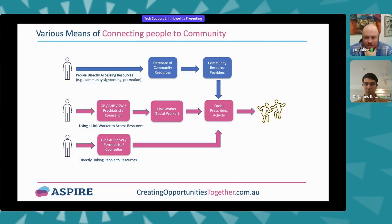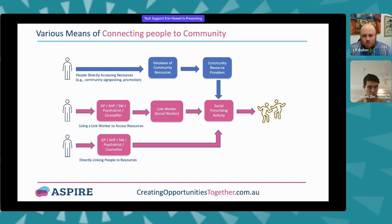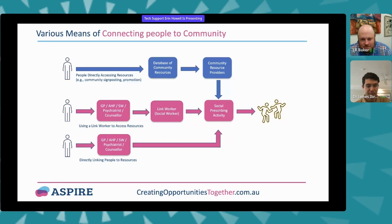There are lots of different ways to connect people back into community resources. The top path is the traditional way of signposting community resources — databases, local networks, or council websites. The middle path is the most common social prescribing model: the link worker-assisted approach, where a health provider — GP, social worker, psychologist, psychiatrist — links a person to a link worker who develops an individual plan looking at interests and needs and links them to appropriate activities. There are also digitally enhanced models where a health provider links someone directly to digital databases or directly to activities. For example, some GP practices overseas have a garden where they link the person into the gardening program, or in Gippsland there's a GP who takes patients out walking.